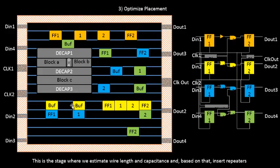The buffer takes the input, reconstructs the signal, and sends it in its original shape to flip-flop 1. Similarly, the signal from DIN4 is sent to a buffer, which does signal conditioning of the incoming waveform, reconstructs the original waveform, and sends it to flip-flop 1. This step is called optimized placement. Repeater insertion is not required everywhere — for DIN1 to flip-flop 1, the wire length is very small, so no repeater is needed there.